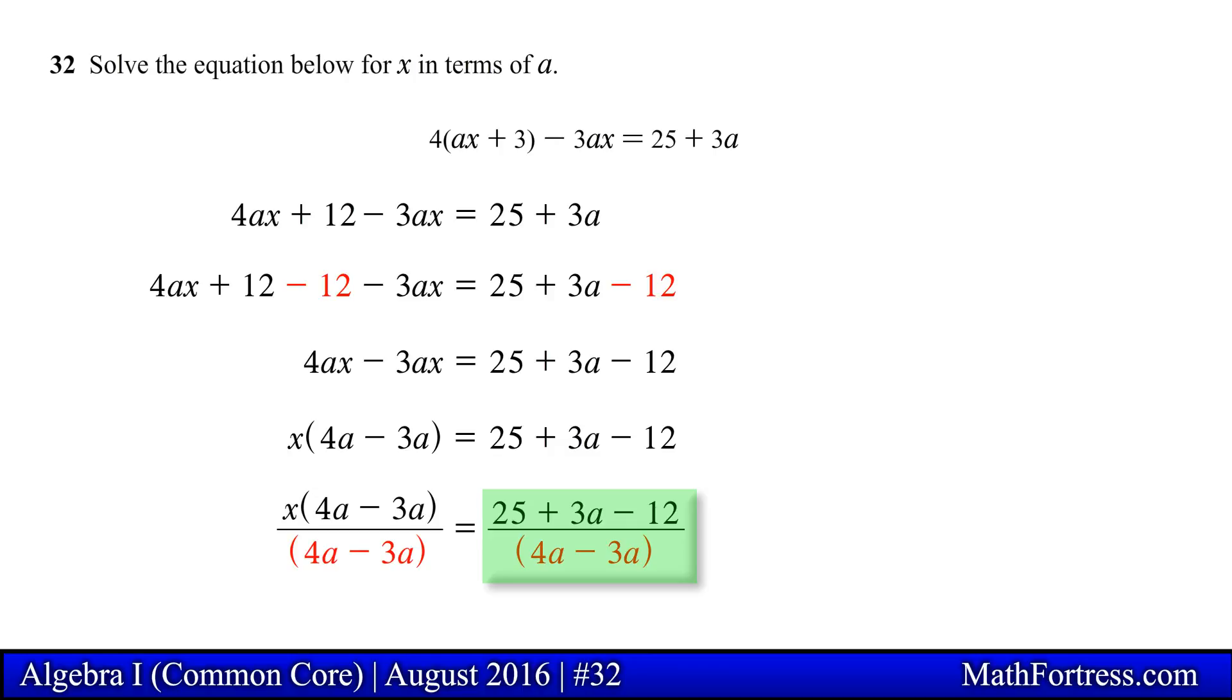The last step is to simplify the numerator and denominator by collecting like terms. Doing that we obtain the quantity 13 plus 3A over A.